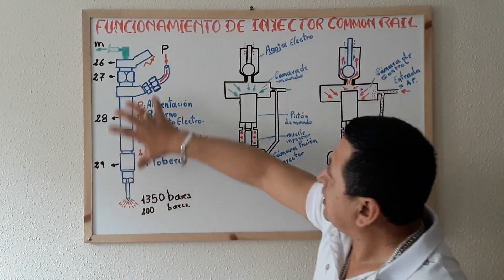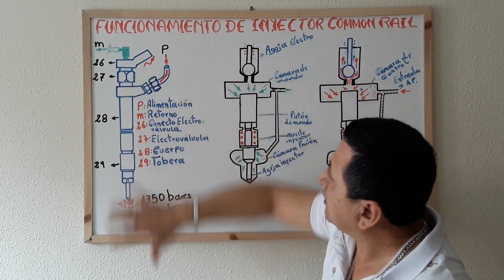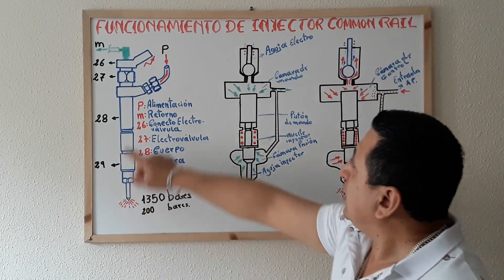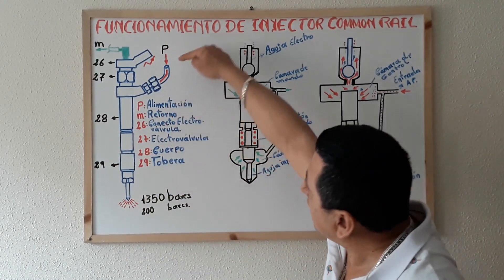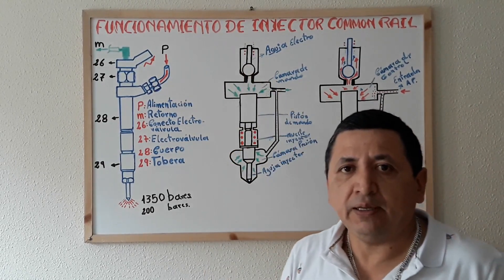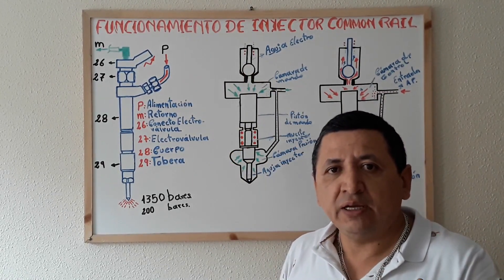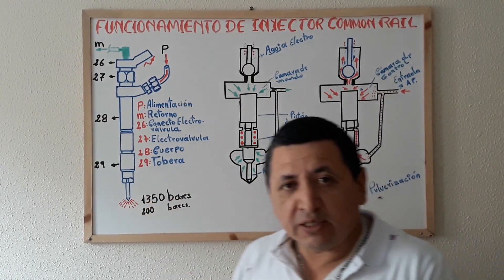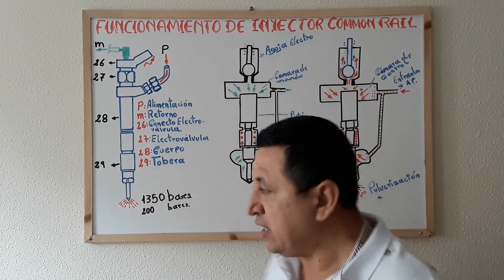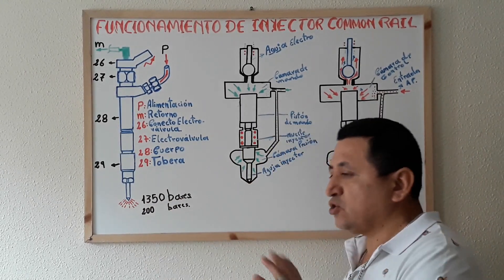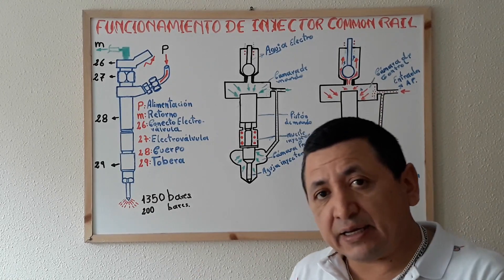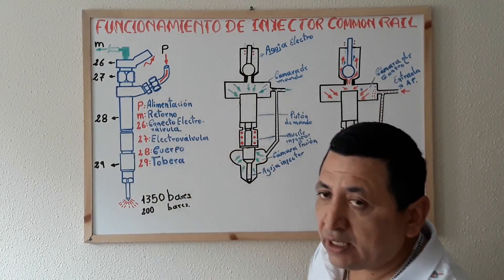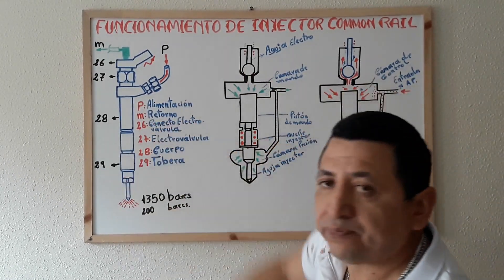In this injector — this is the physical part of an injector that all of you will know — I have labeled P as the fuel supply inlet, where the combustible enters at high pressure. We are talking about high pressure of 1,350 bar of pressure. At idle we are at 150 to 200 bar of pressure. That is the pressure needed to enter the interior of the injector.